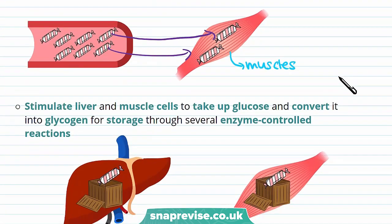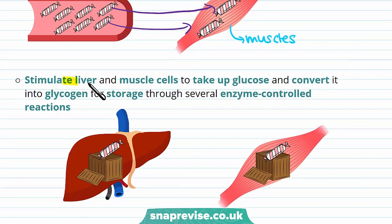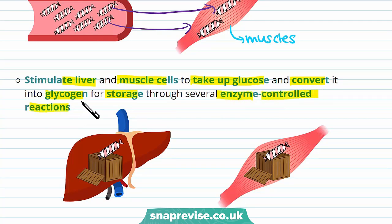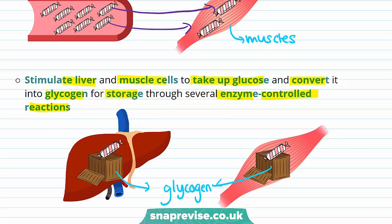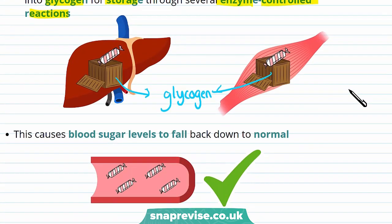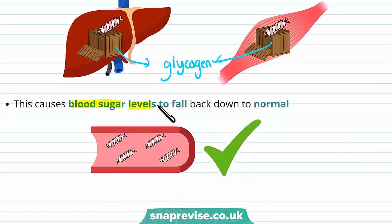These muscles can use this glucose for respiration to transfer energy for muscle contraction. Insulin also stimulates liver and muscle cells to take up glucose and convert it into glycogen, for storage, through several enzyme-controlled reactions. This is glycogen — it acts as a store of glucose, which means you don't have to be constantly eating to obtain glucose. This causes blood sugar levels to fall back down to normal.